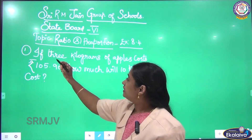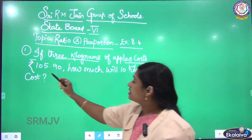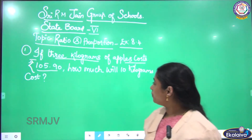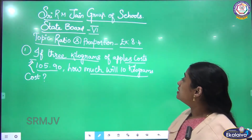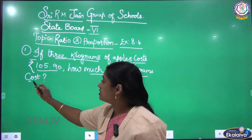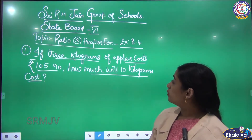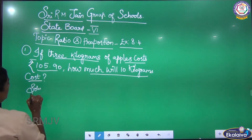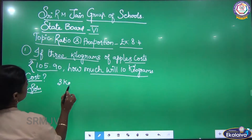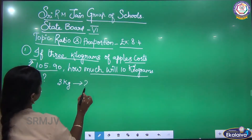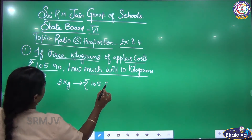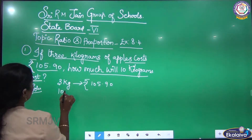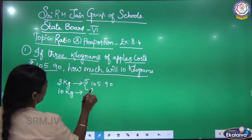Listen children: if 3 kilograms of apples cost rupees 105 and 90 paise, how much will 10 kilograms cost? They are given the 3 kg cost — 105 rupees 90 paise — and I am going to find out the 10 kg cost.